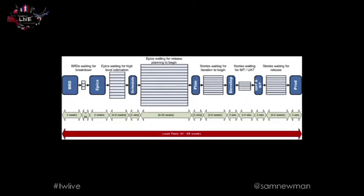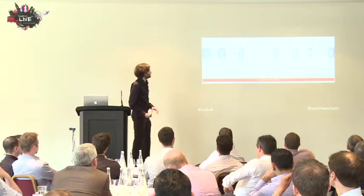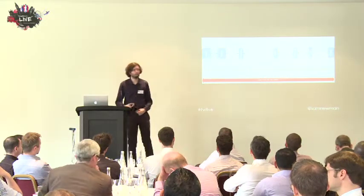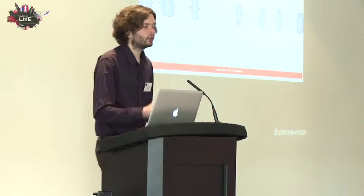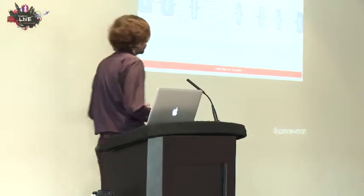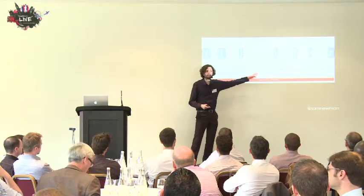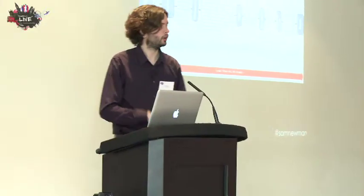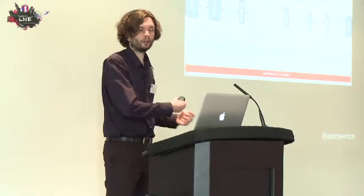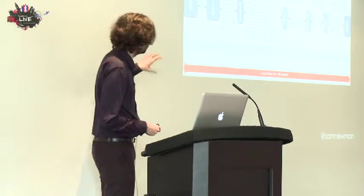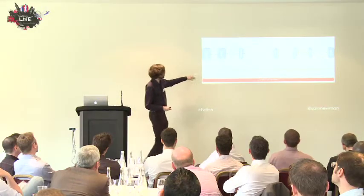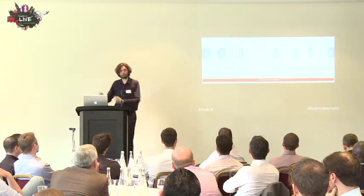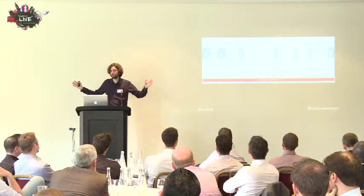Here's a real-world example from a client, using value stream mapping. We spent time working with the team, talking to developers and the product owner — and they all told us different stories. We were initially told: it takes a long time to pick up a feature, and once implemented it takes a long time to get that feature into production. But when we sat down and went through the whole process, we found it could take up to 46 weeks for an idea to be documented in a BRD before it even got to a developer. The initial view was the problem was at the end of the pipeline; when you stood back, you realized the problem was elsewhere.